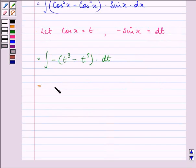Further, we have minus integral of t cube dt plus integral of t raised to the power 5 into dt.